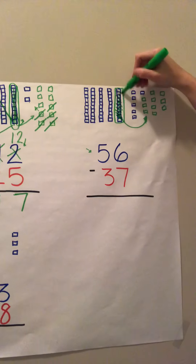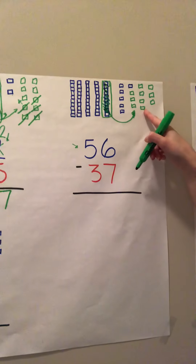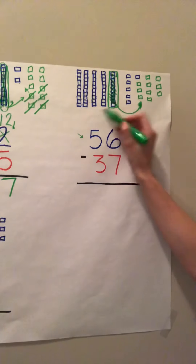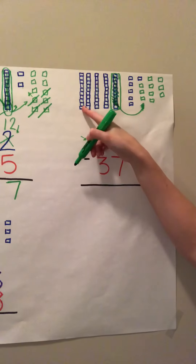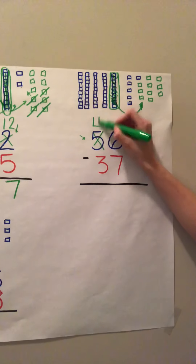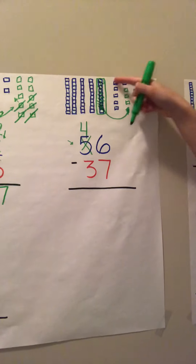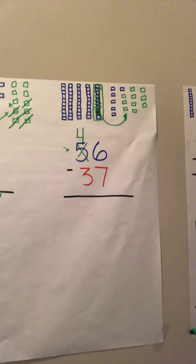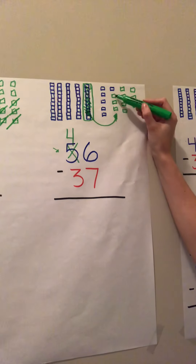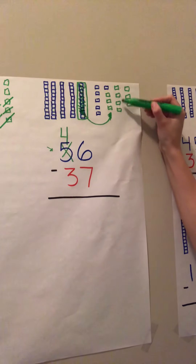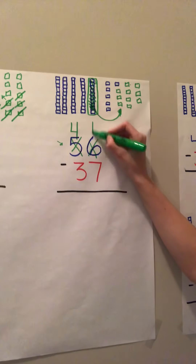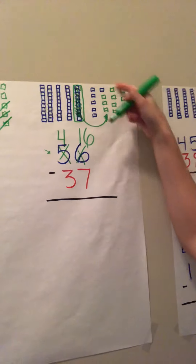So they're no longer on this side — we moved them over here. Now we can do our subtraction. But before we get started, we don't have five tens anymore. We have four. And we don't only have six cubes anymore; we added ten more. So how many do we have? We have sixteen one cubes.